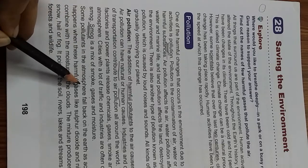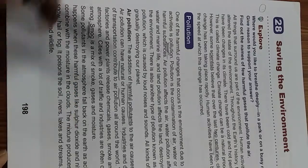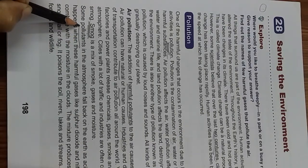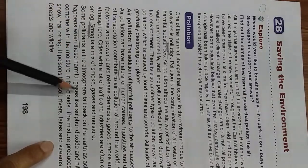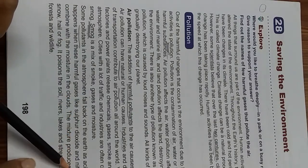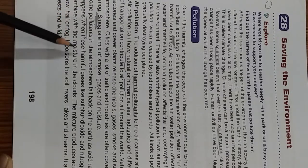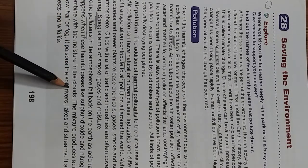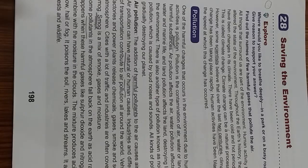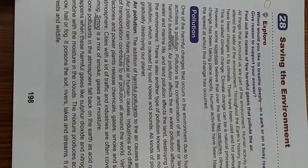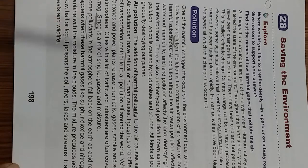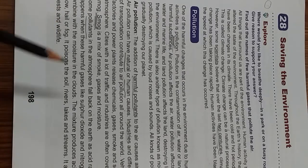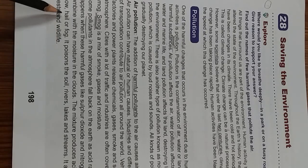Some pollutants in the atmosphere fall back on the earth as acid rain. This happens when harmful gases like sulfur dioxide and nitrogen dioxide combine with moisture in the clouds. The mixture produces acid rain, snow, hail, and fog.